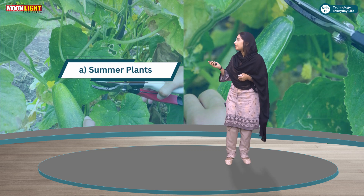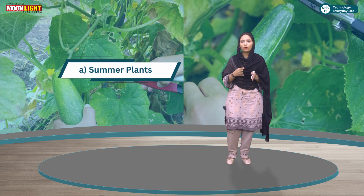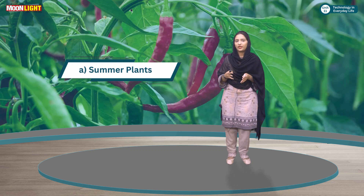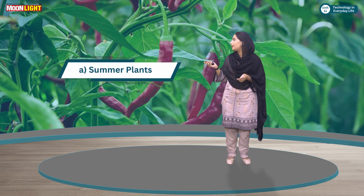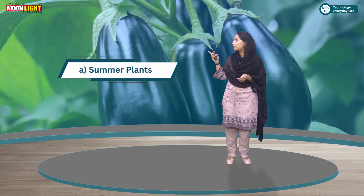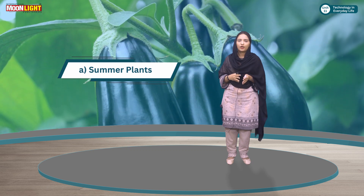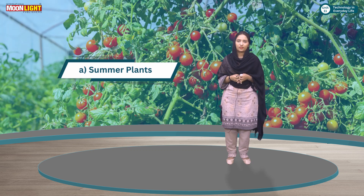If you look at these plants, there are different plants which are cucumber, pepper, and other plants. On the screen, there are eggplants and tomatoes.